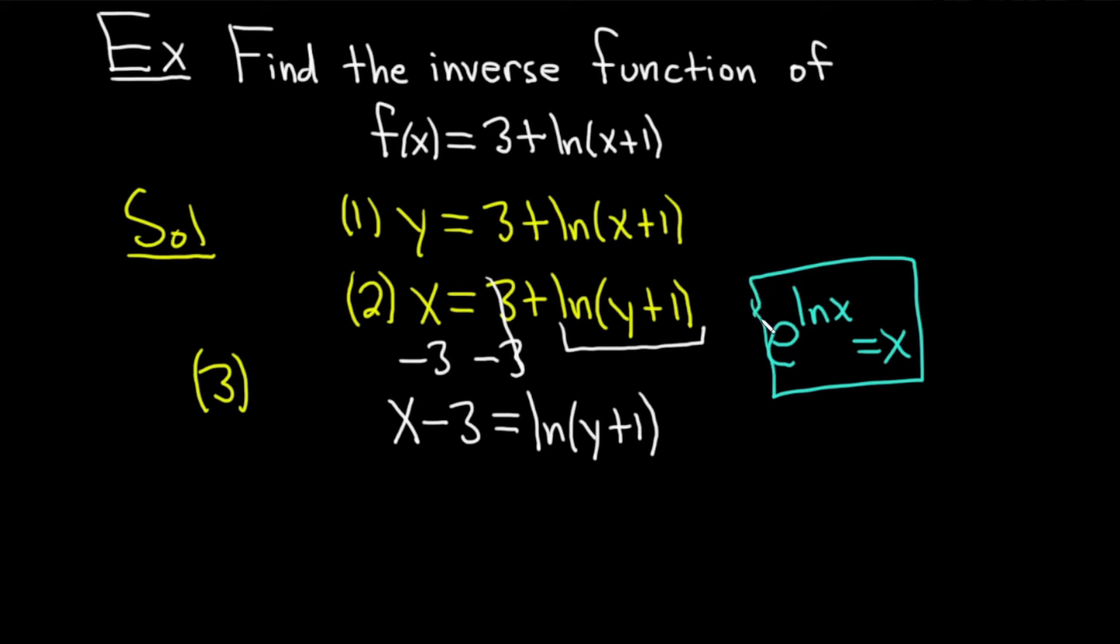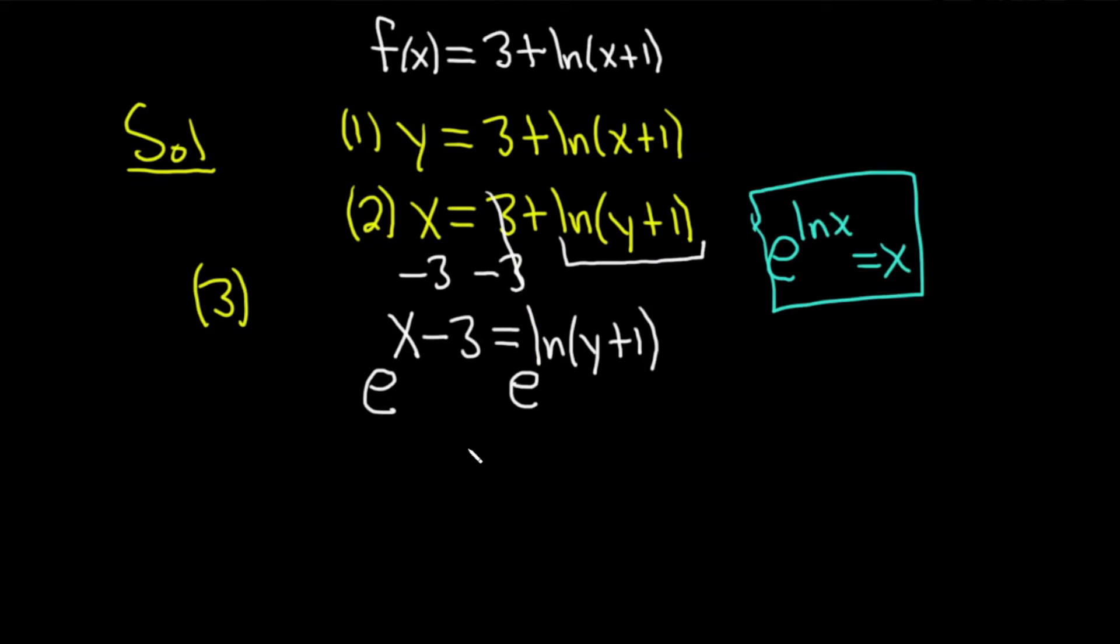You can think of it as cancellation if you like, but it is because they're inverse functions, and so you just get x. So here what we're going to do is we're going to put an e on both sides. This process is called exponentiation. So we're exponentiating both sides.